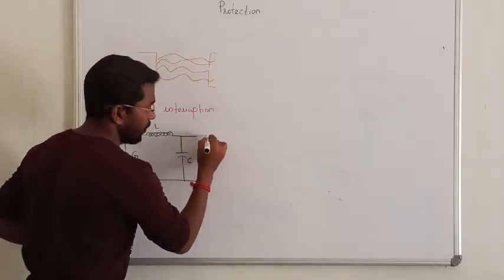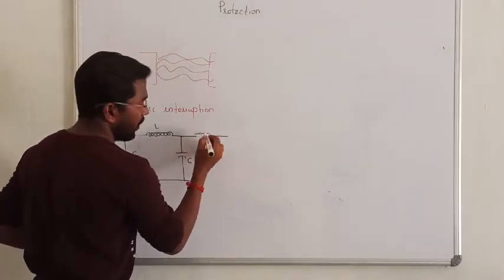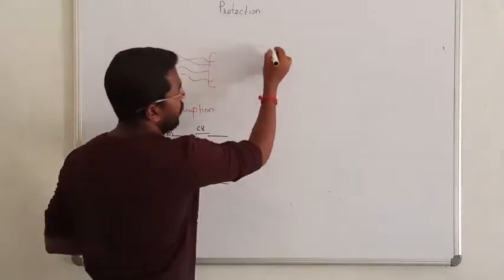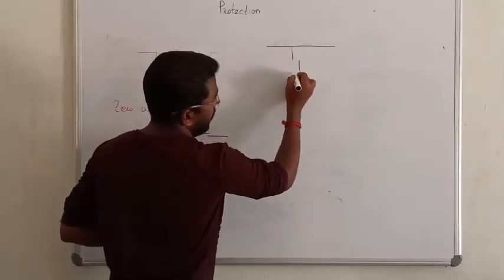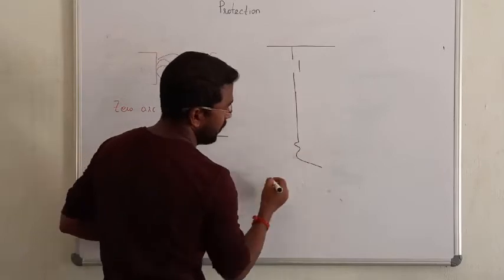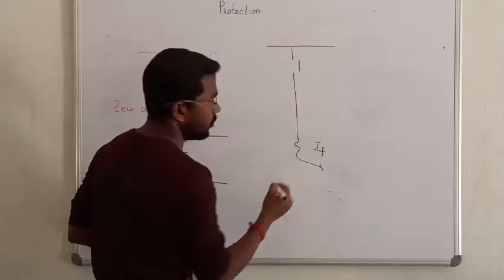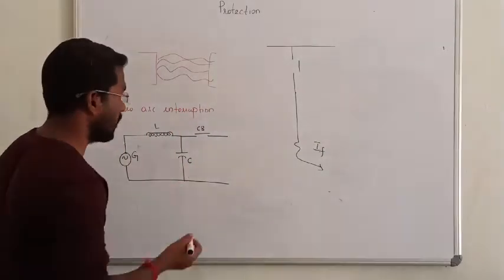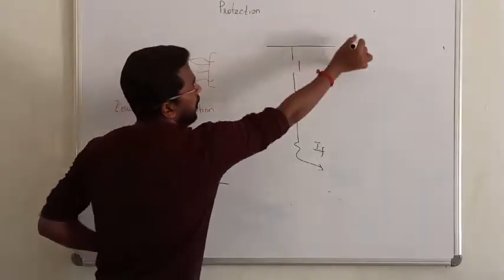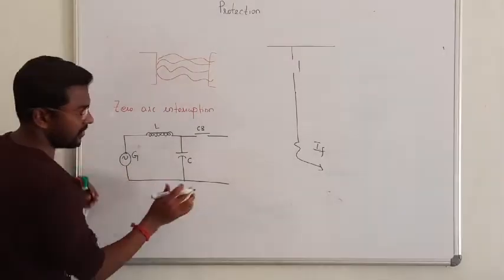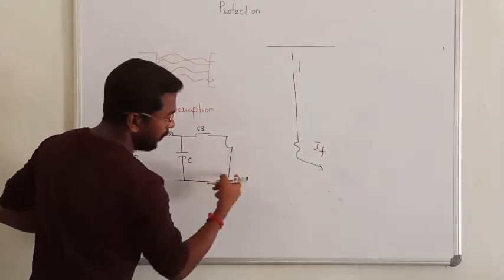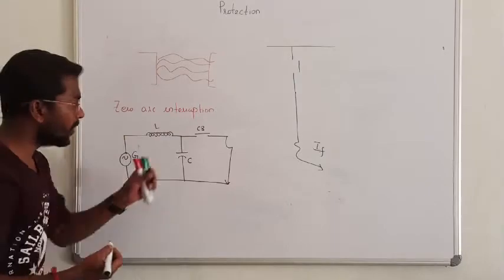I will take the circuit breaker. Here is our circuit breaker. If we look at the circuit breaker, we will fix the circuit breaker. There is a fault in the transmission line. That is why we cut the fault. Now I know that this is my circuit breaker contact. Now there is a fault.